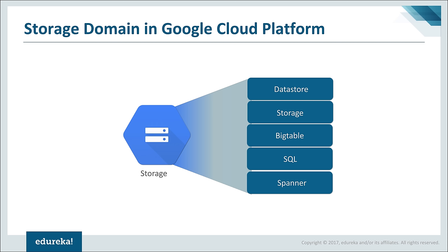Then you have a service called SQL, which is for structured data. Whenever your application deals with structured databases, you can use the SQL service from Google Cloud. There is also a service called Spanner, which is similar to SQL but the difference is scalability — SQL cannot be scaled horizontally, while Spanner can. So if your application needs horizontal scaling and has variable or unpredictable usage, you'd probably use the Spanner service from the storage domain.